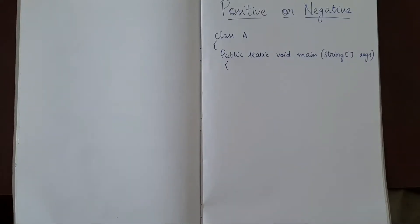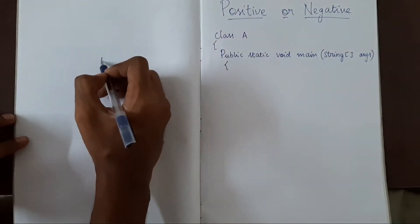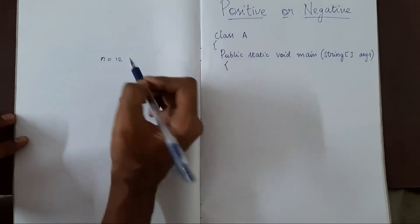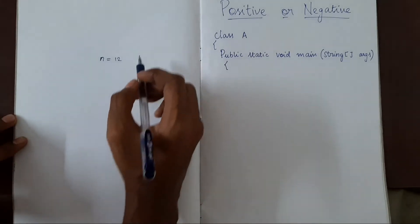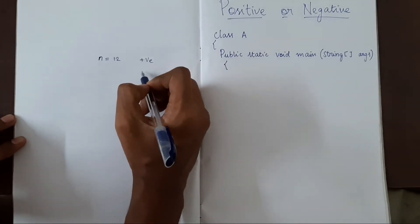Hello everyone, today we will see how to find if a given number is positive or negative. Let's say we have a number n equal to 12. How to check if this number is positive or negative?